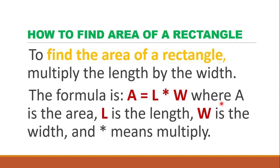So how do you find the area of a rectangle? To find the area of a rectangle, you multiply the length — that is the long side — by the width. The formula is: A equals L times W, where A stands for area, L stands for length, and W stands for width. The multiplication sign here just means to multiply.